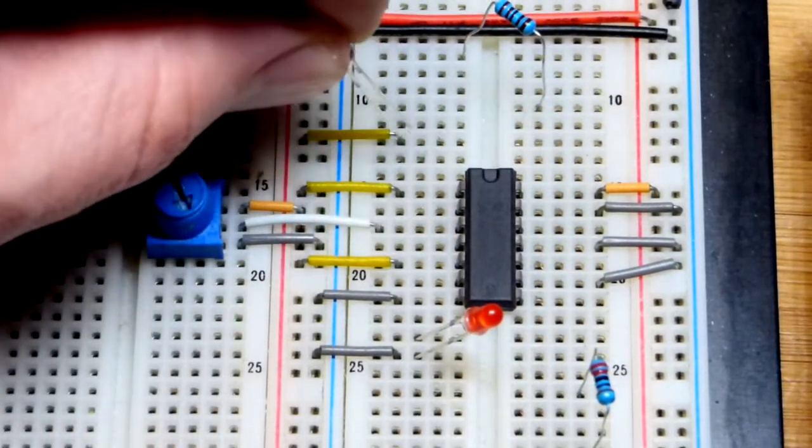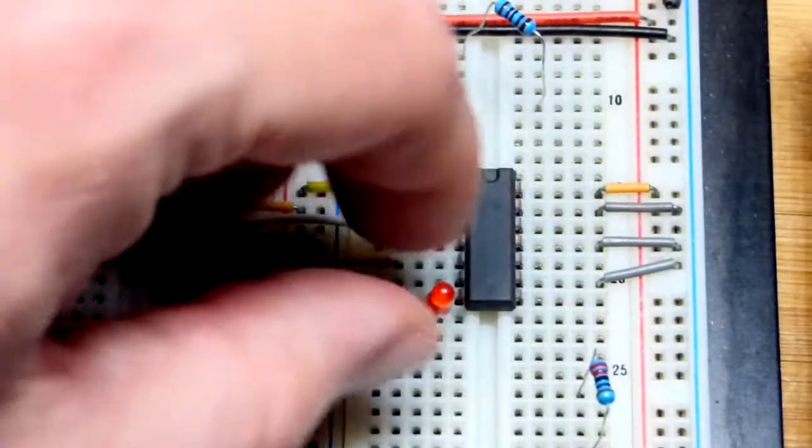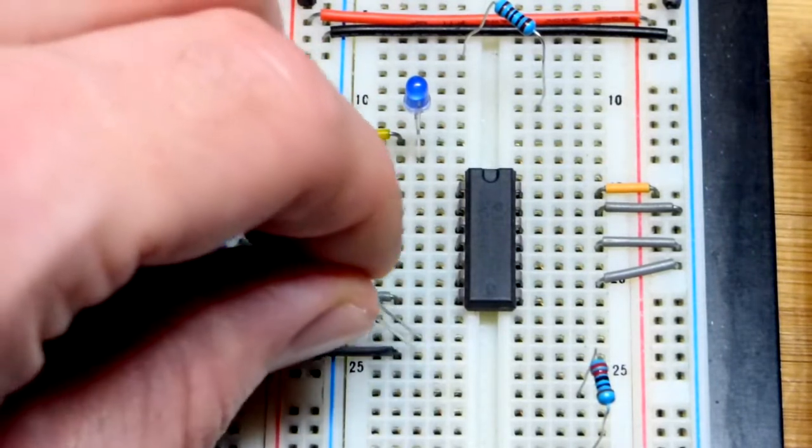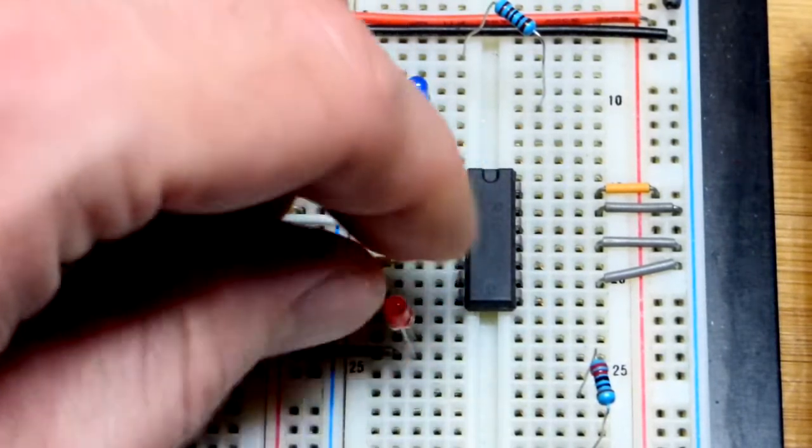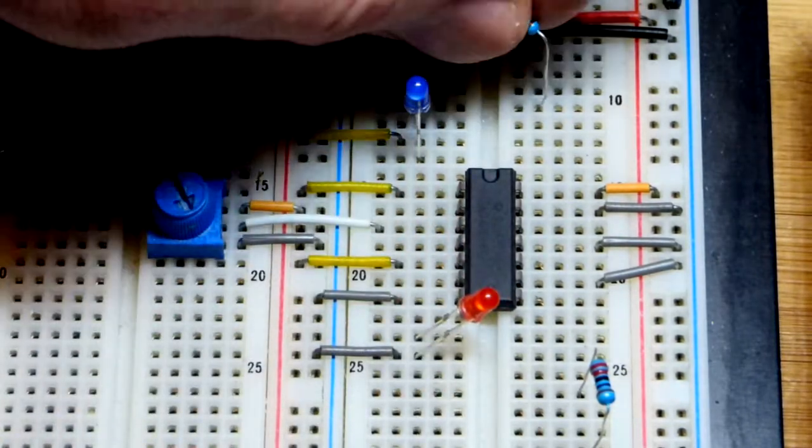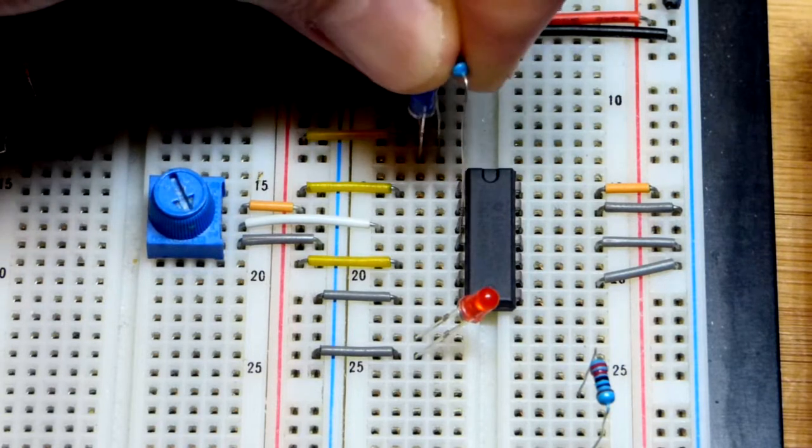The short lead, the cathode, goes to the gray jumper there to zero volts. Then we have the long lead up one row. First I'm going to wire the blue LED with a one kilohm resistor because they just naturally get brighter.